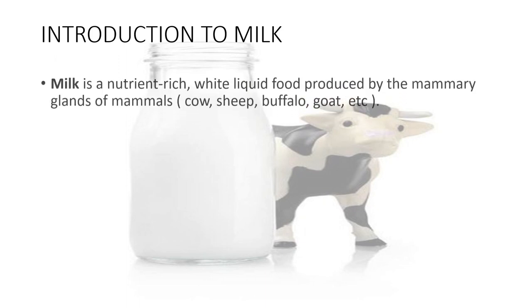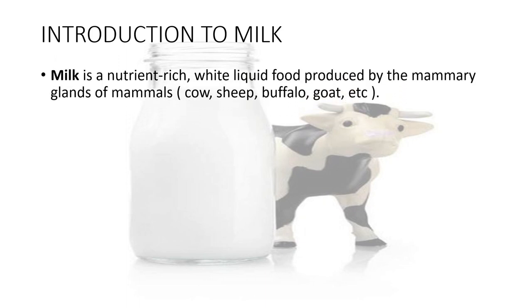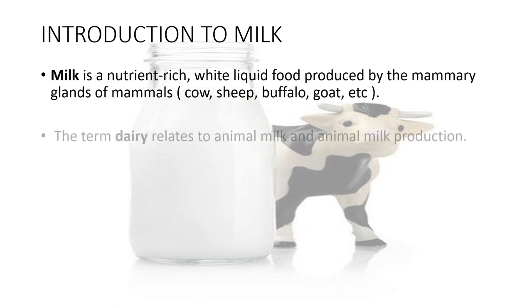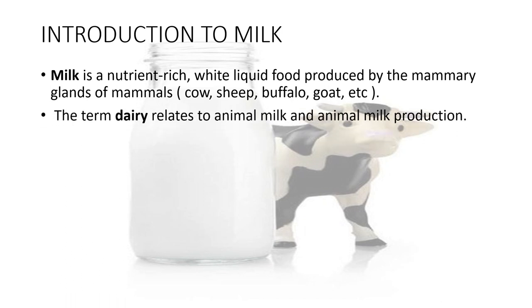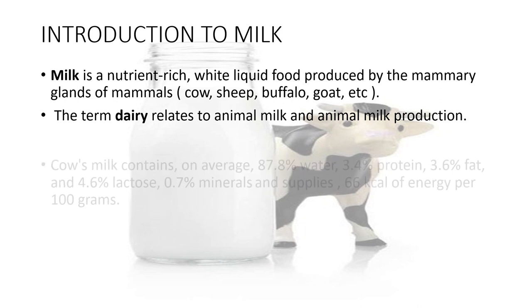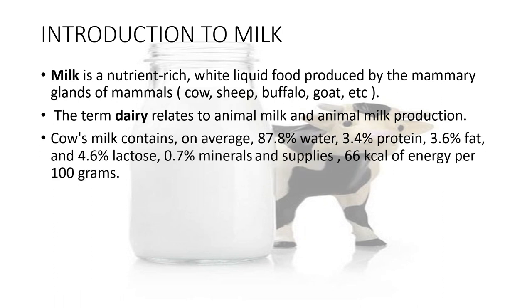Introduction to milk. Milk is a nutrient-rich white liquid food produced by the mammary glands of mammals — cow, sheep, buffalo, goat, etc. The term dairy relates to animal milk and animal milk production. Cow's milk contains on an average 87.8% water, 3.4% protein, 3.6% fat, 4.6% lactose, 0.7% minerals, and supplies 66 kcal of energy per 100g.